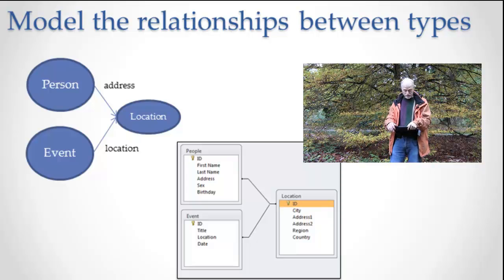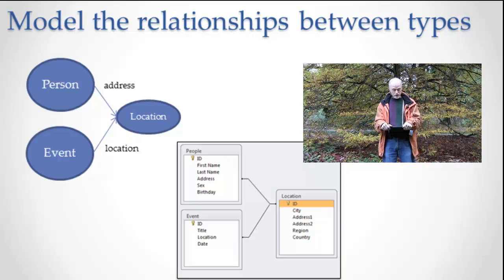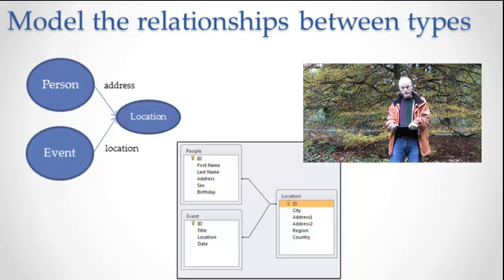Here's a model of person, event, and location. Notice that a person has an address, and that address is a location. Events also have a location. So we have these three information types: person, location, and event, but they're all related because people have locations and events have locations.